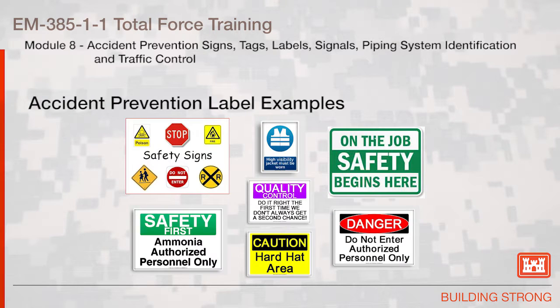Here are examples of several different types of accident prevention signs. As you can see, green is on-the-job safety. Red is a danger type sign. Yellow indicates caution. And blue is just additional information available.